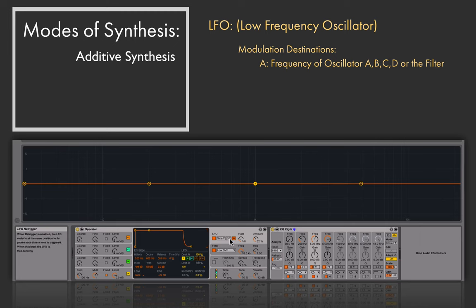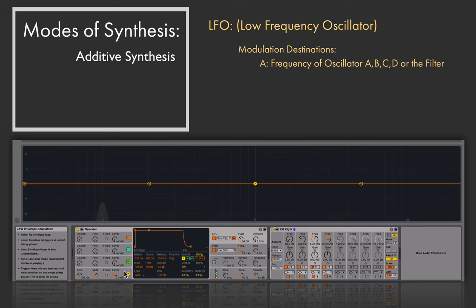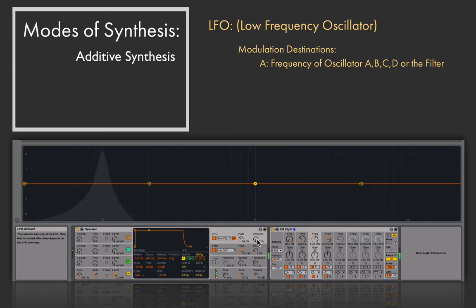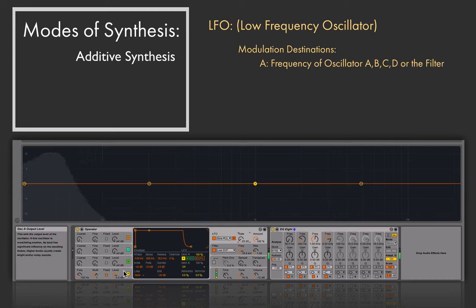We can use the LFO to modulate the frequencies of any of the four oscillators by toggling those destinations. With oscillator A at 100 Hz in fixed mode and the LFO set to low rate modulating oscillator A's frequency, as I bring up the amount, the frequency that's being produced by oscillator A is no longer steady at 100 Hz but rather moving up and down at the rate specified by the LFO — visible both in the EQ8 and audible to the ears.